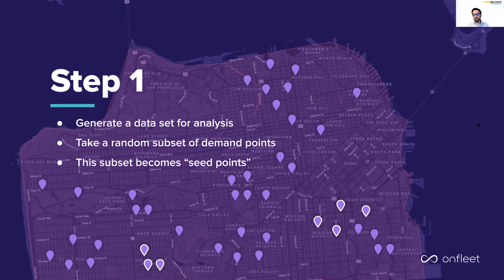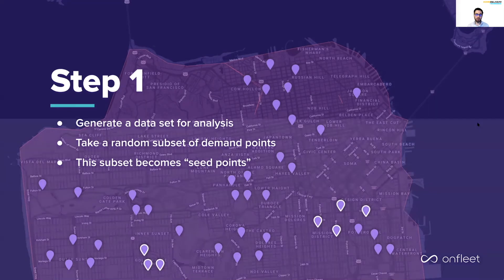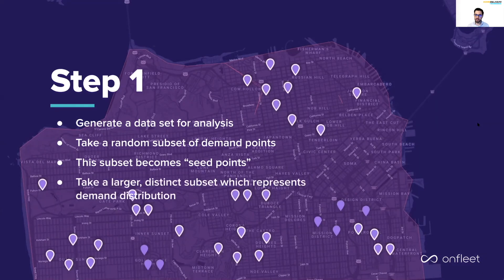For this example, let's assume we've picked 100 candidate seed points. This seed point is going to represent a center point where a driver could hypothetically fulfill the demand around it — the deliveries and the pickups. Then we're going to take a larger, distinct subset of the same data set, which will continue to represent our demand distribution — let's say 1,000 demand points.